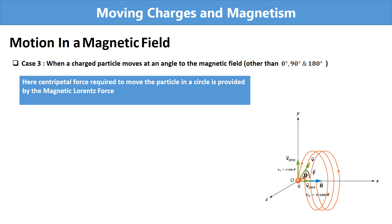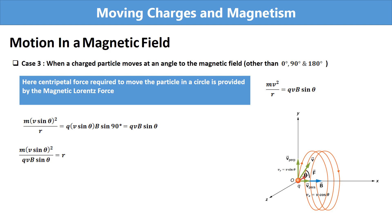The expression for centripetal force is mv² / r and the expression for magnetic force is qvB sinθ. So we write mv² / r = qvB sinθ. Here, in place of v we substitute vsinθ, because vsinθ is the component of velocity responsible for circular motion. Rearranging this equation, we can derive the expression for the radius of the circular path, given in Equation 1.